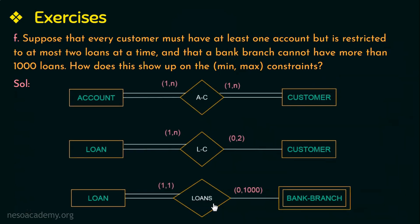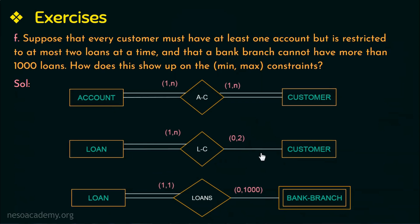We take the relationships AC (account-customer) and LC (loan-customer) from the ER diagram. For AC: every customer must have at least one account, so total participation represented as 1, and a customer can have at most n accounts, giving min-max (1,n). For LC: every customer may or may not have loans, so partial participation represented as 0, and as given, one customer is restricted to at most two loans, giving min-max (0,2).